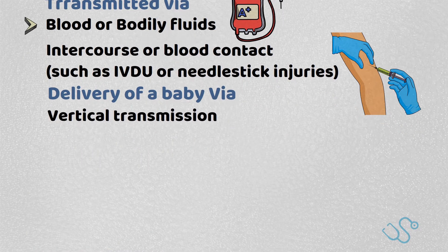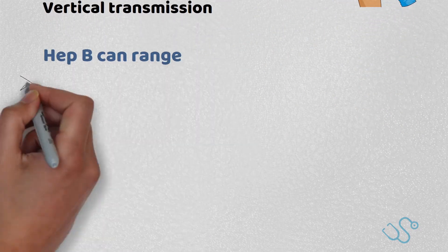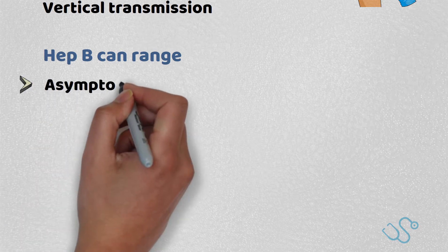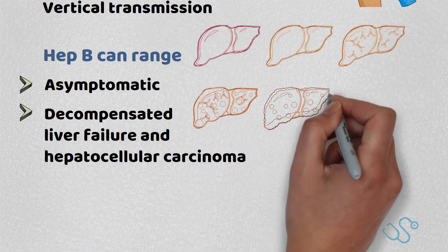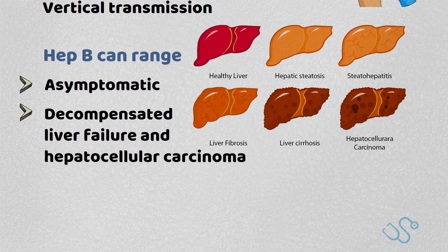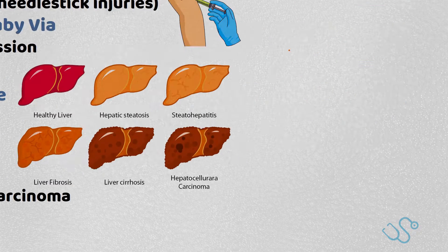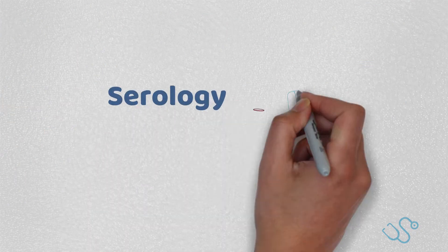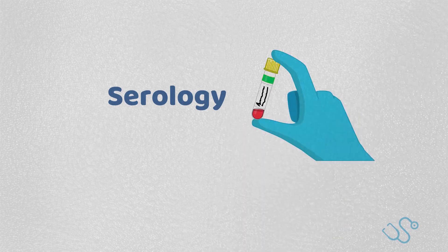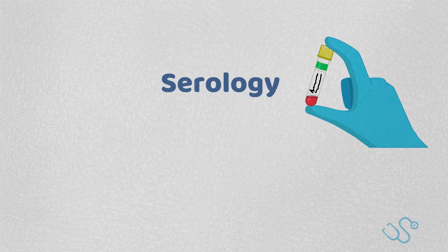In terms of the disease itself, Hepatitis B can range from being asymptomatic all the way to decompensated liver failure and hepatocellular carcinoma, with the latter being more serious presentations affected by the duration of infection as well as the host defence mechanism. When we talk about serology, we need to understand the viral antigens, viral DNA, and associated antibodies.